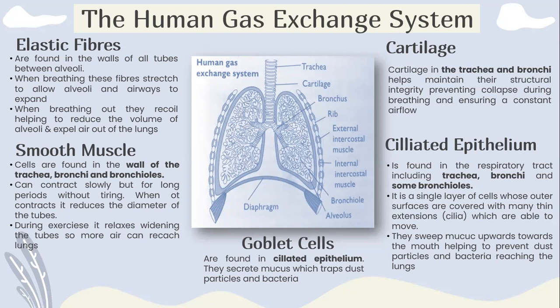Goblet cells are found in ciliated epithelium. They secrete mucus which traps particles and bacteria.